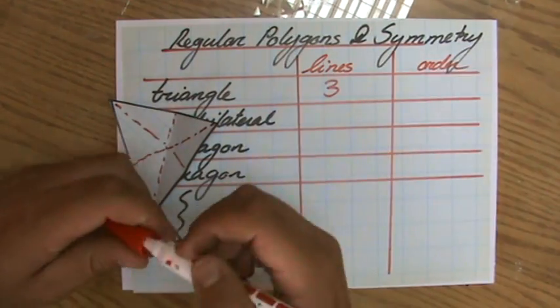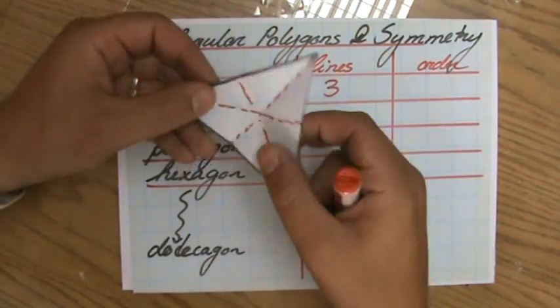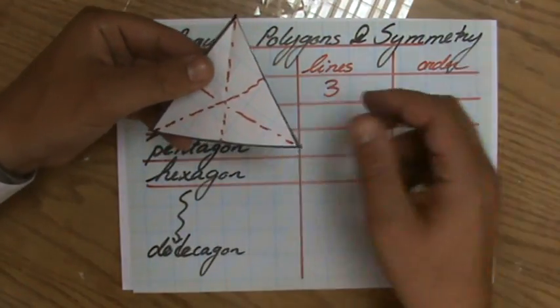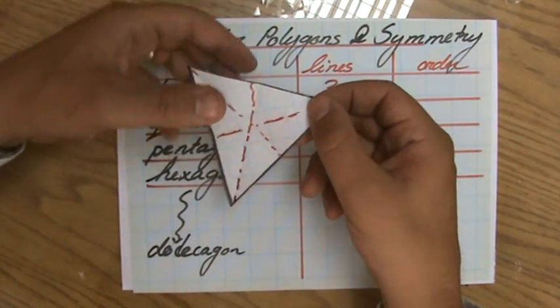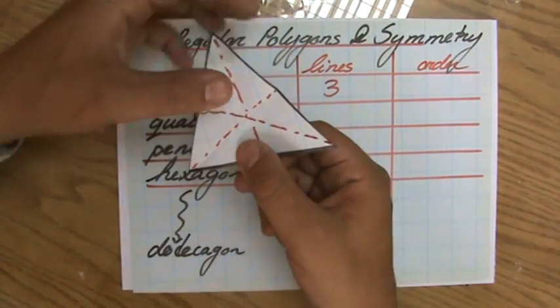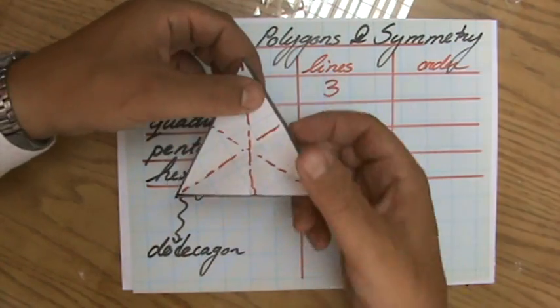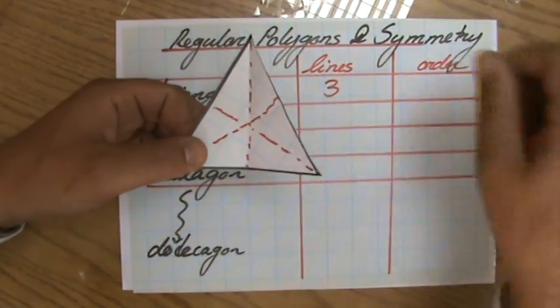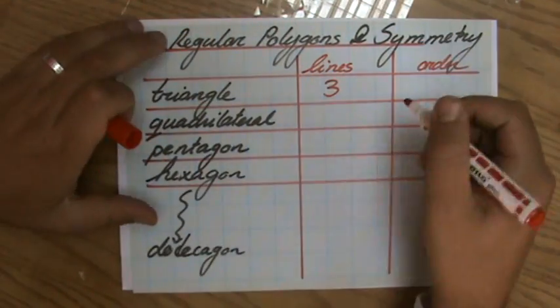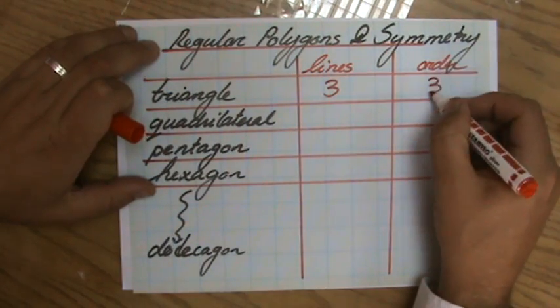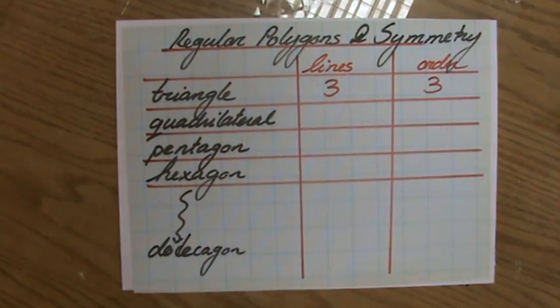So the regular triangle has three lines of symmetry. And what is the order of rotational symmetry? So if I rotate it one full turn, one, how many times does it look the same? Two, and I'm back in its original position, three. That's interesting. So the order of rotational symmetry of a regular triangle is three, and it has three lines of symmetry.